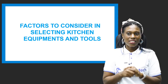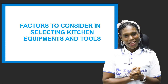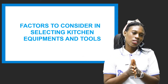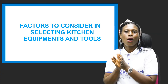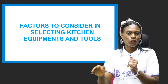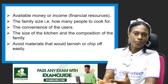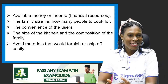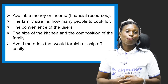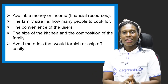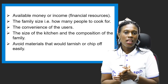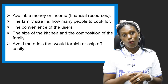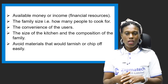Now let's look at the factors to consider when selecting kitchen equipment. We've talked about all the kitchen equipment, tools, and utensils — now we look at what to consider before purchasing them. The first factor is available money or income. When the family has the money to purchase equipment, they can get as many tools as needed. Money is one key factor to consider when purchasing kitchen equipment and tools.